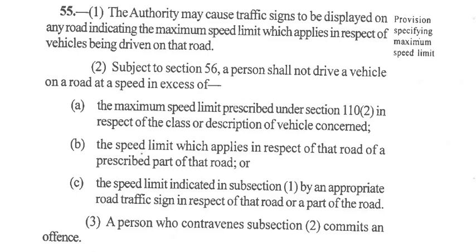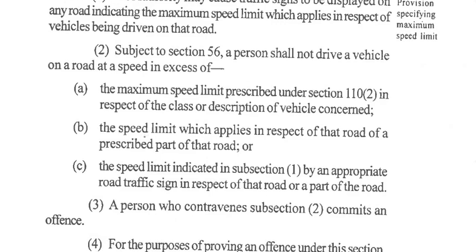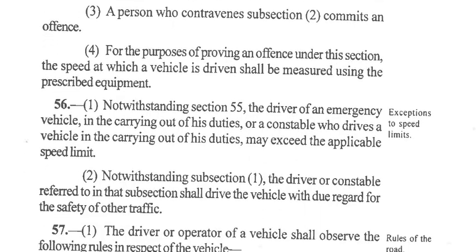Subsection 3 — A person who contravenes Subsection 2 commits an offense. That means if you go over the speed limit, you commit an offense. For the purposes of proving an offense under the section, the speed at which a vehicle is driven shall be measured using the prescribed equipment.